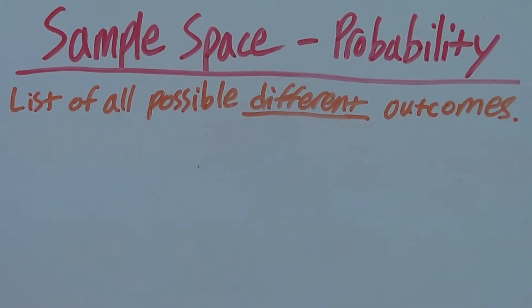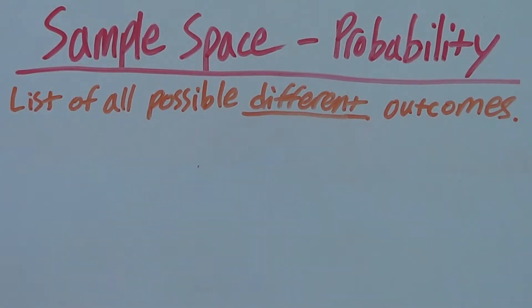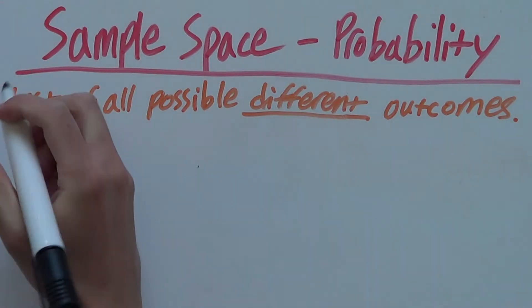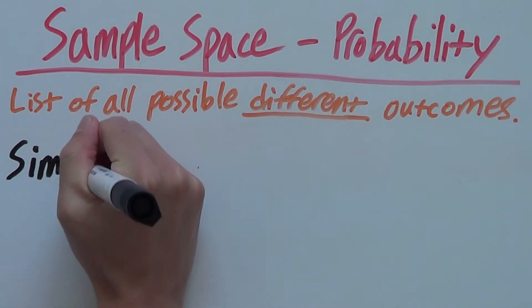Sample space is just a list of all possible different outcomes. So, let's say we want to find the sample space of the word simultaneous.